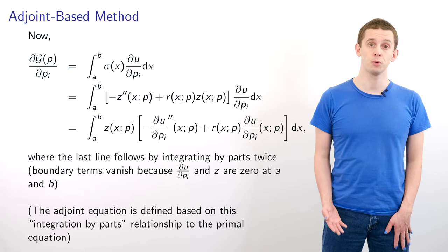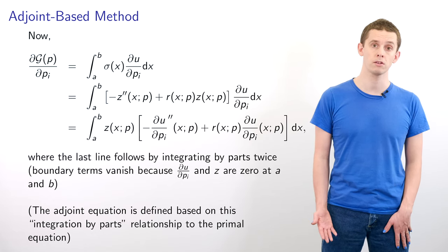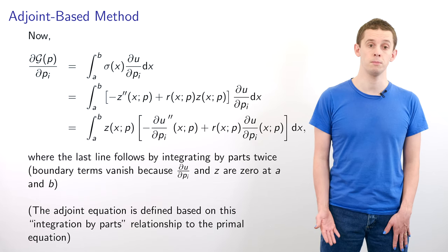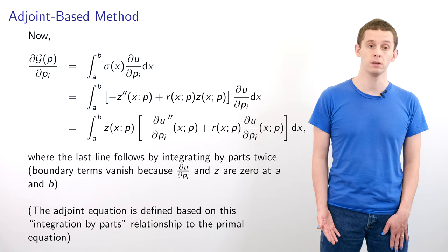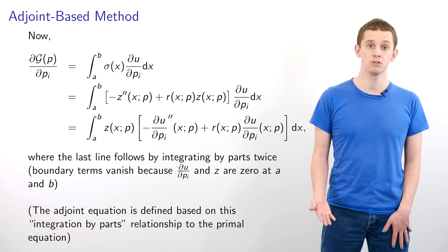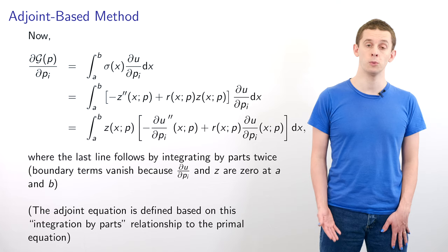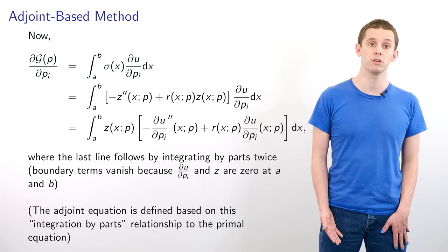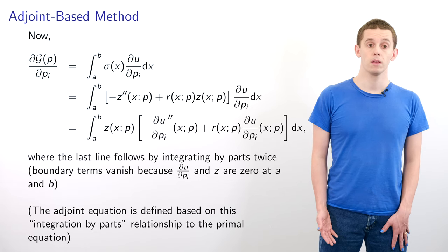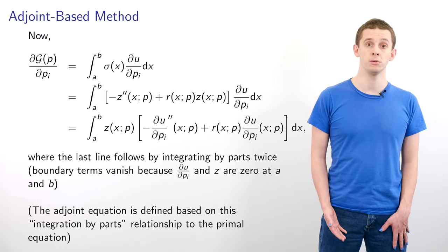Now let's revisit our expression for dG/dp_i, which equals the integral from a to b of σ(du/dp_i)dx. We can use our adjoint equation to substitute for σ, giving us the integral from a to b of (-z'' + rz)(du/dp_i)dx. Using integration by parts to shift the two derivatives on z'' across to du/dp_i, we get the integral from a to b of z(-d²u/dp_i + r du/dp_i)dx. The boundary terms vanish due to our zero Dirichlet boundary conditions.